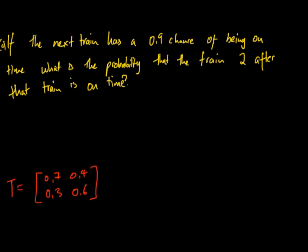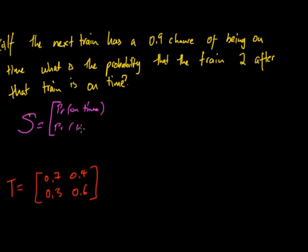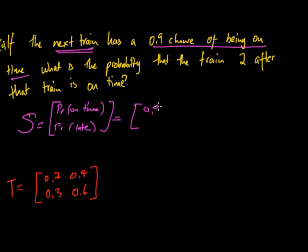The third part of the question: if the next train has a 90% chance of being on time, what is the probability that the train 2 after that is on time? We already have the transition matrix. We need to work out the initial condition S₀. Since on time is the top entry and late is the bottom, the next train gives us S₀ = [0.9, 0.1] — a 90% chance of being on time and a 10% chance of being late. Previously we used [1, 0] because we were 100% certain.